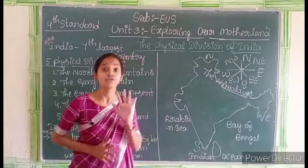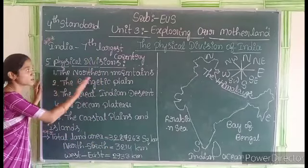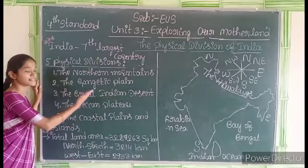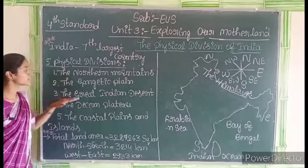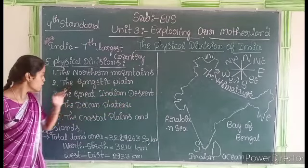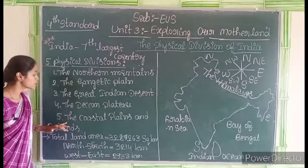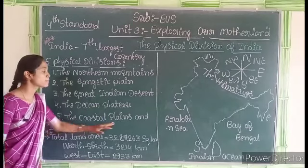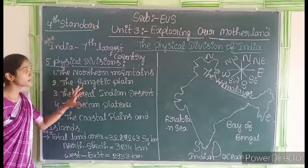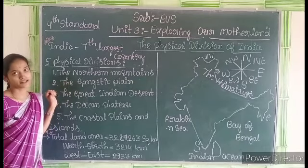There are mainly five physical divisions. They are: the northern mountains, the northern plains, the Great Indian Desert, the Deccan Plateau, and the coastal plains and islands. These are the five main physical divisions.